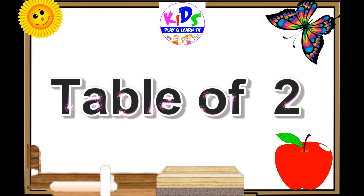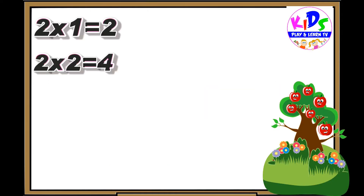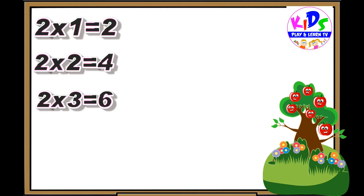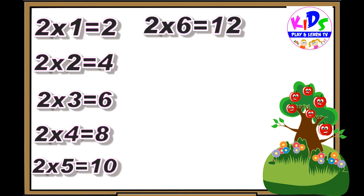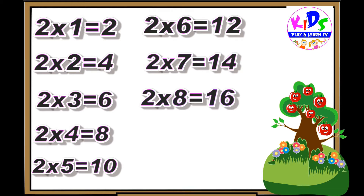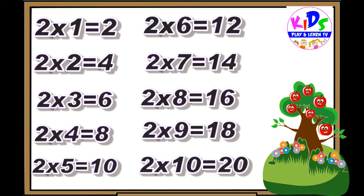Hey kids, let's repeat. 2 ones are 2, 2 twos are 4, 2 threes are 6, 2 fours are 8, 2 fives are 10, 2 sixes are 12, 2 sevens are 14, 2 eights are 16, 2 nines are 18, 2 tens are 20.